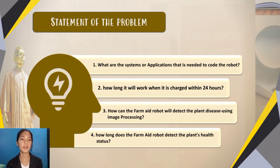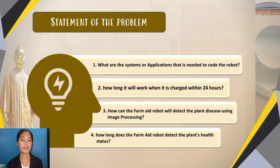Statement of the problem: What are the systems or applications needed to code the robot? How long will it work when charged within 24 hours? How can the farm aid robot detect plant disease using image processing? And how long does the farm aid robot take to detect the plant's health status?